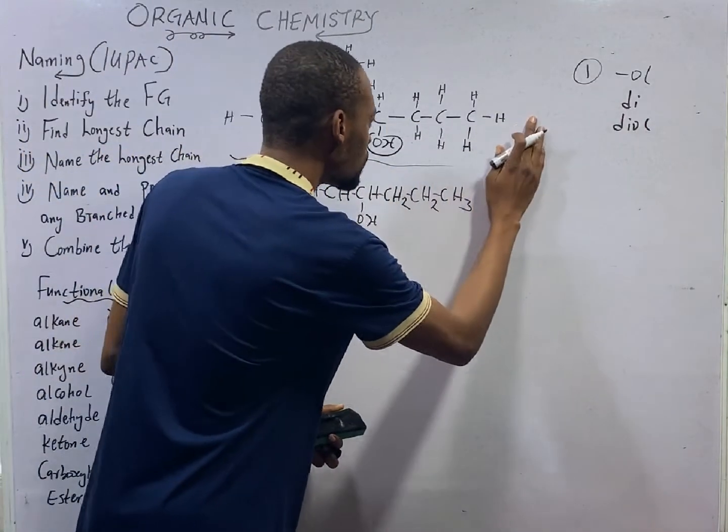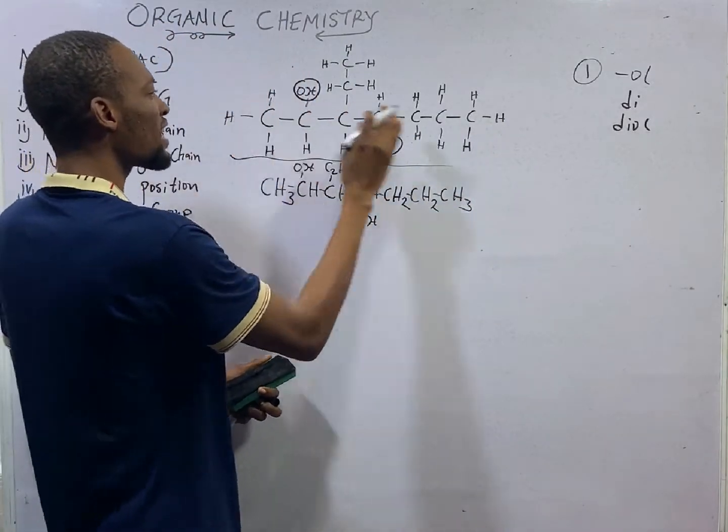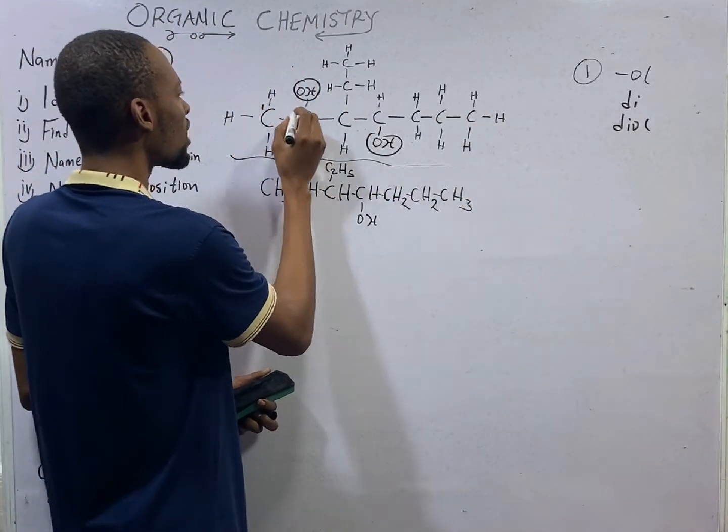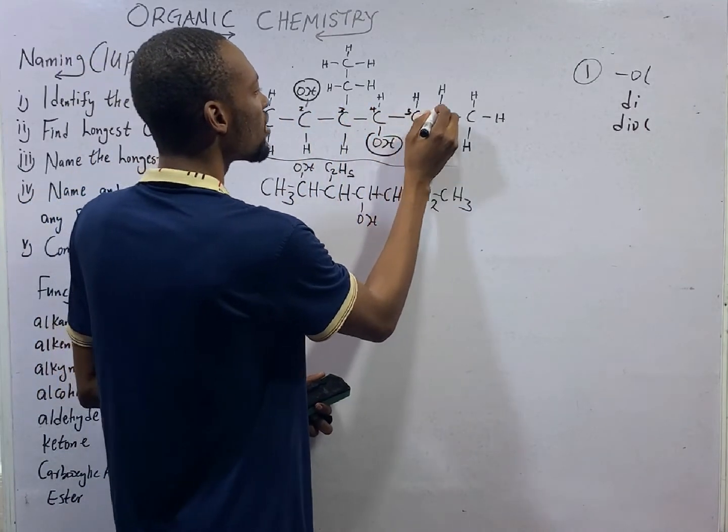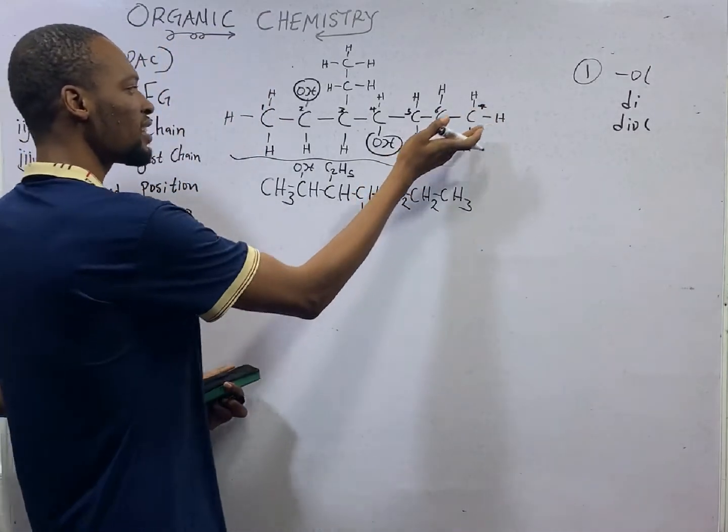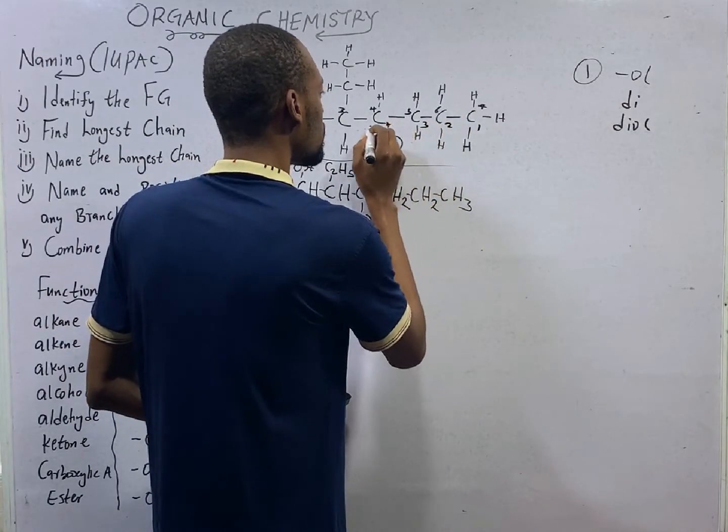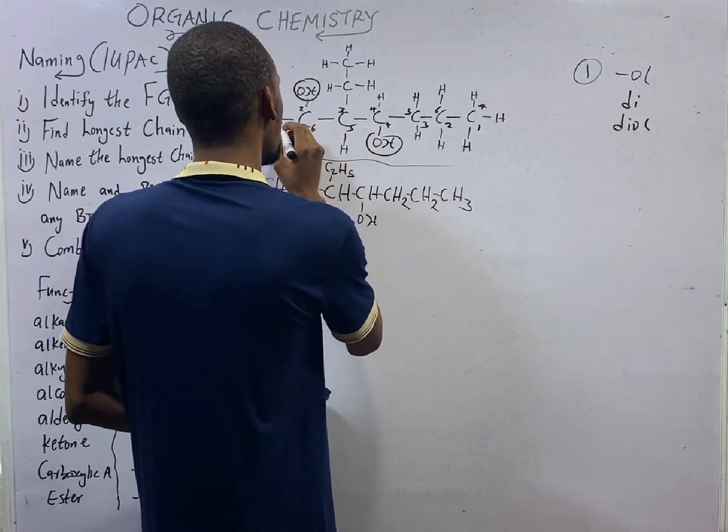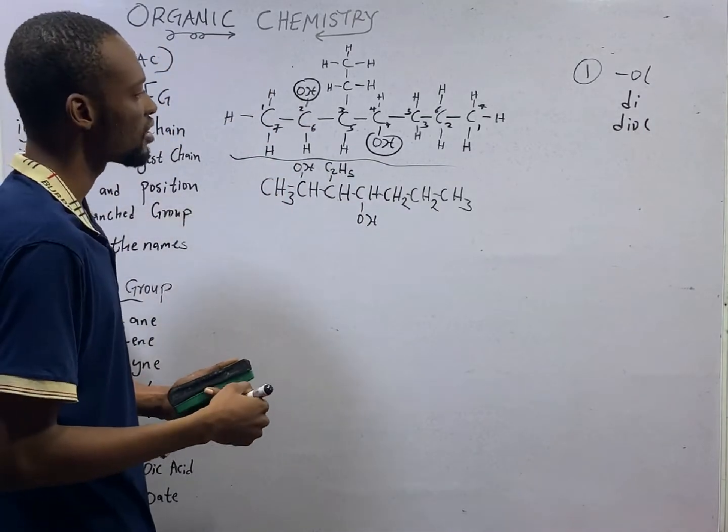Either to name straight this way or to start naming from here. If we start counting from here, this is carbon 1, 2, 3, 4, 5, 6, and 7. If we start counting from here, this is 1, 2, 3, 4, 5, 6, and 7. The longest chain is 7.